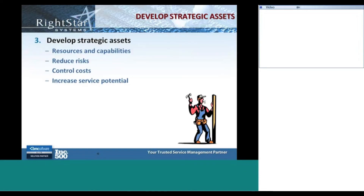The third step in service strategy is to develop strategic assets, so IT should be continually developing their internal resources and capabilities, looking at ways they can reduce risk through redundancy and sufficient capacity planning. IT needs to control costs and overall increase their service potential to the business. It's like a carpenter working with his resources and capabilities — the resources would be the tools, making sure their tools are up-to-date, their raw materials are the best they can be, and making sure the carpenter has the appropriate skills and understanding to deliver the types of services the business needs.